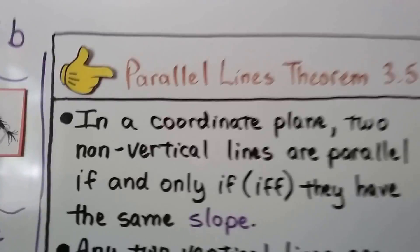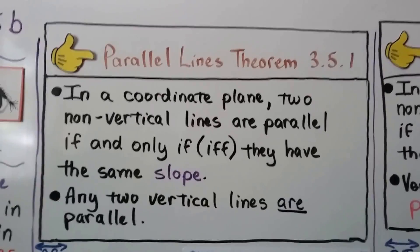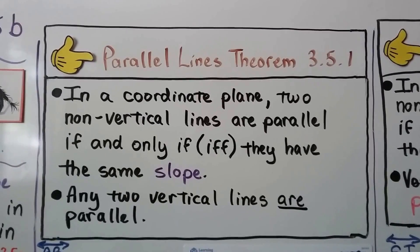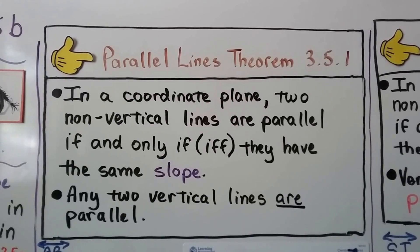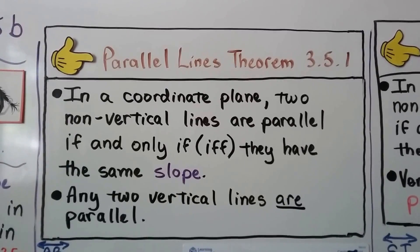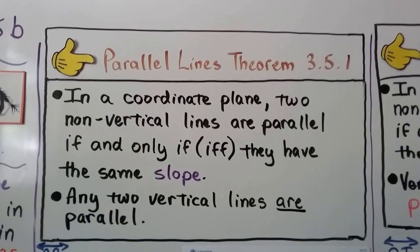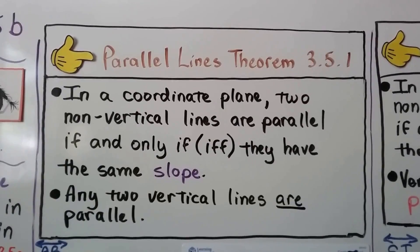Here's our first theorem for the lesson. We have the parallel lines theorem. It says in a coordinate plane, two non-vertical lines are parallel if and only if—and we can abbreviate if and only if as IFF—they have the same slope. So they're parallel if they have the same slope. And any two vertical lines are parallel.